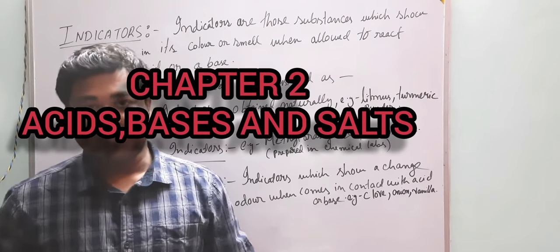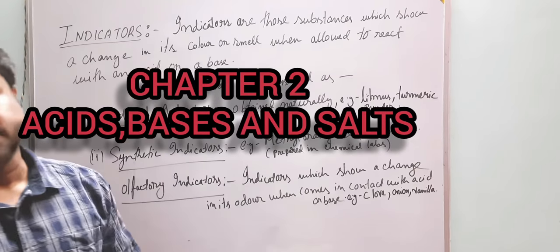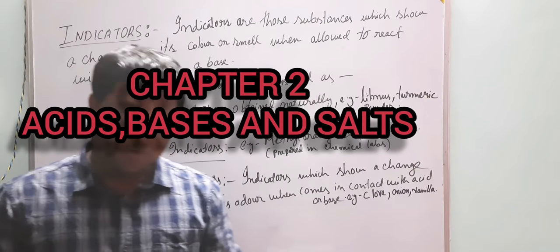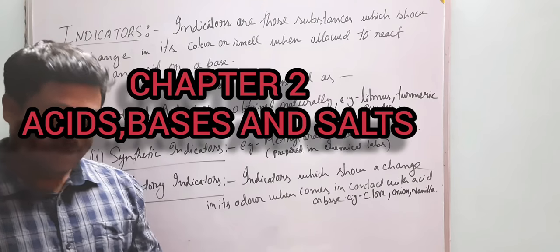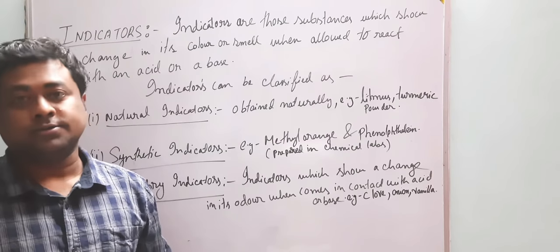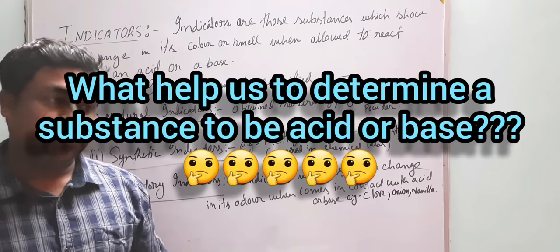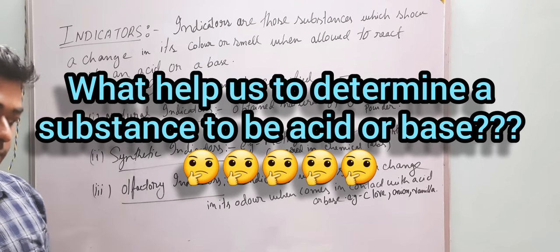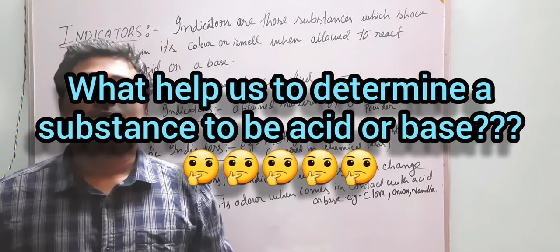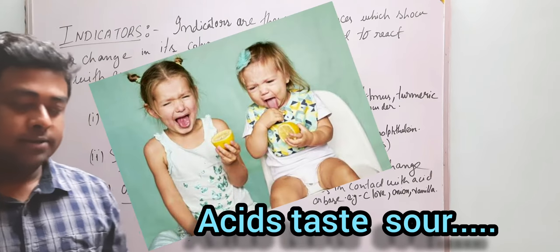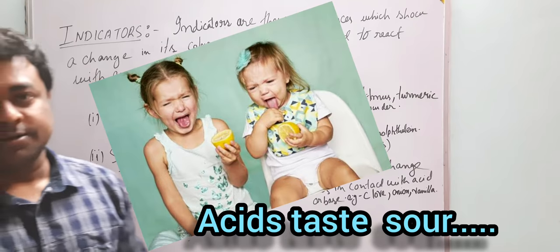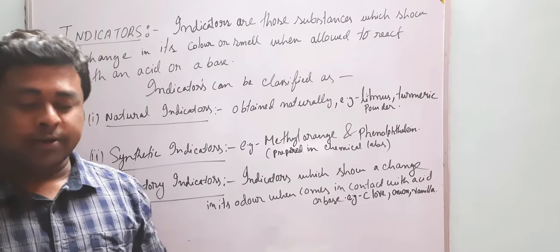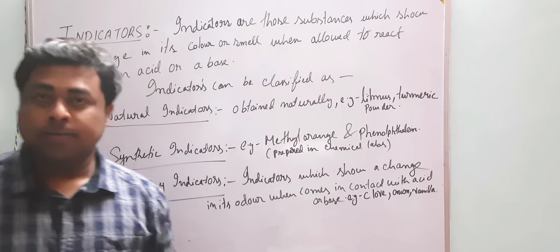Hello students, today we are going to discuss Class 10 General Science Chapter 2: Acids, Bases and Salts. Before we discuss acids, bases and salts, we need to learn something about the general criteria — how we can distinguish an acid and a base. First of all, acids generally taste sour, whereas bases taste bitter.